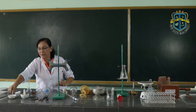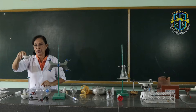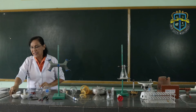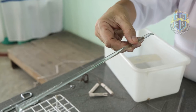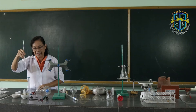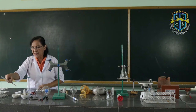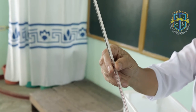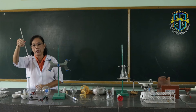This is the evaporating dish. It is used to contain liquids to be evaporated. Then we have the stirring rod. The purpose of the stirring rod is, of course, to stir — for mixing purposes. And this is the thermometer. The thermometer is used to determine the temperature of substances.